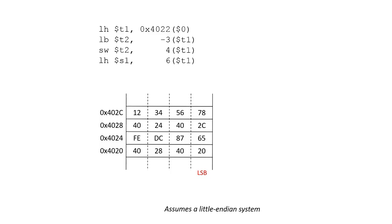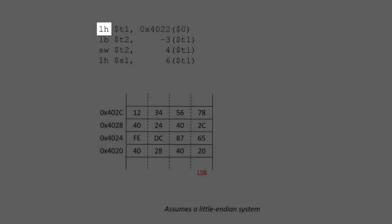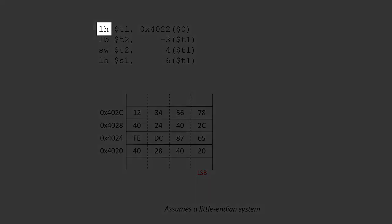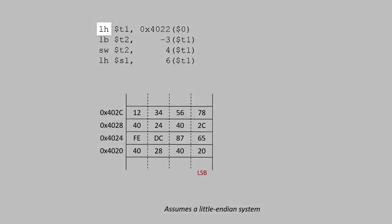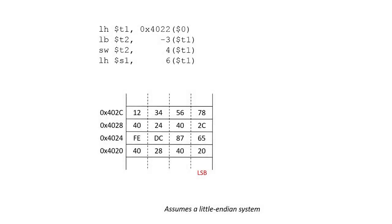To start off, we're going to look at the first instruction. This first instruction, LH, means it's a load half word instruction, meaning that it's going to load two bytes or 16 bits from memory. The first thing we want to figure out is what address it's going to load from. The address is going to be a combination of zero plus the immediate value of 4022, meaning that the address it's going to load from is 4022.